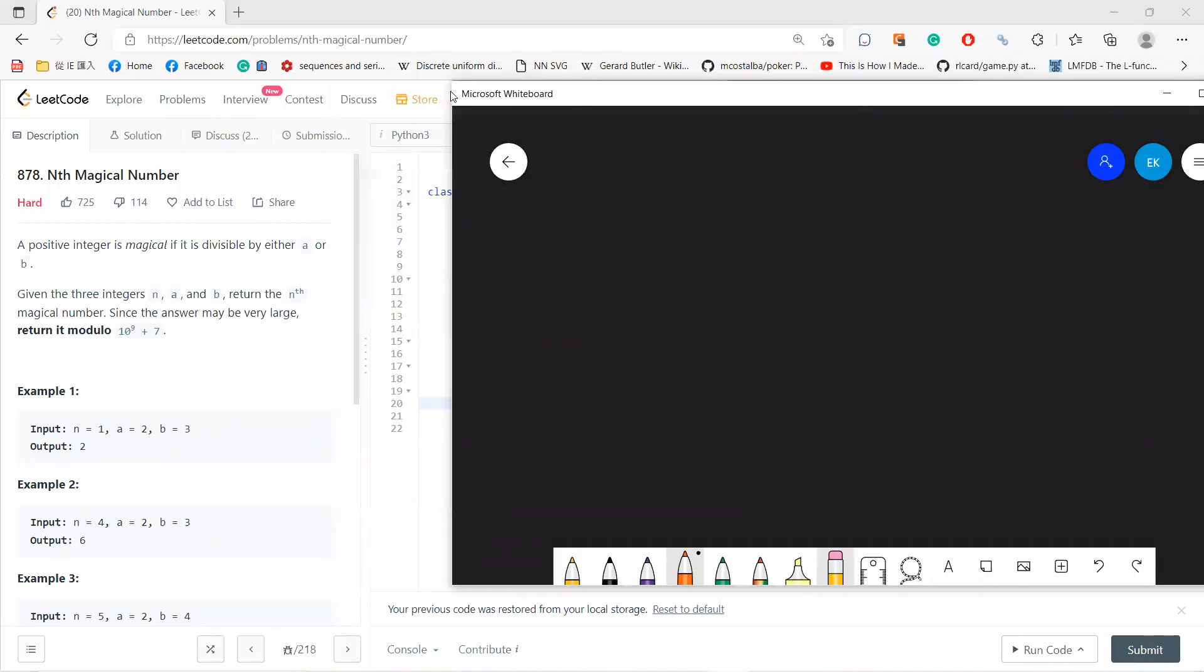Hello guys, so let's solve this N's Magical Number. Okay, so a positive integer is magical if it is divisible by either a or b, and hopefully this is easy to understand.